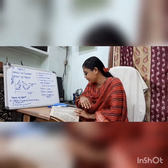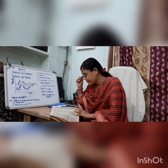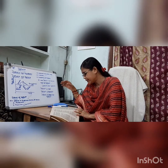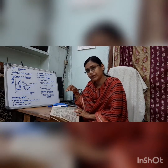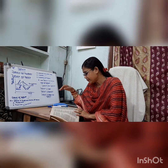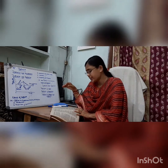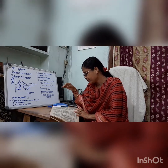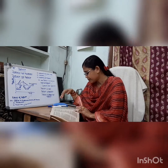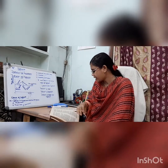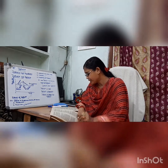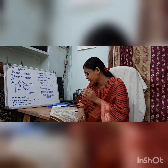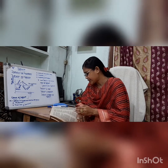Third, repayment of public debt. During the depression period, the government can repay old public debts. This will increase the purchasing power of the people and push up effective demand. Fourth, subsidies. The government should give subsidies to induce businessmen to increase investment. Fifth, public works program. The government should directly undertake public works programs and thus increase expenditure in the public sector.